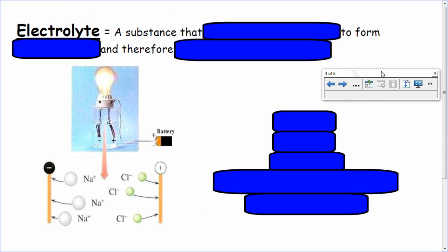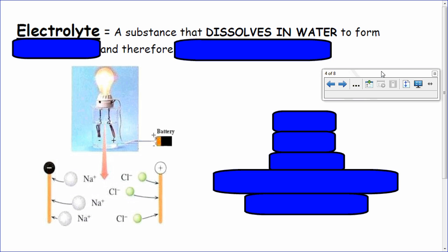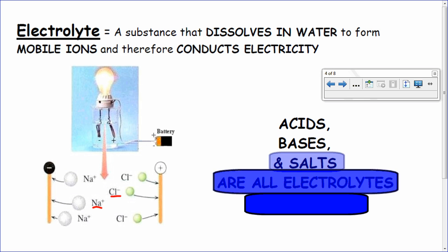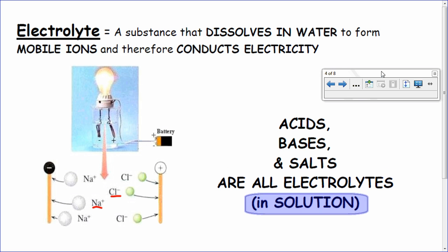Electrolyte — this is what a salt is. Acids, bases, and salts are all electrolytes; it's a bigger umbrella category. An electrolyte dissolves in water, or more specifically dissociates, to form mobile ions and therefore conducts electricity. It doesn't produce electricity — it just lets electricity move through it. There's a picture of a light being powered by a battery with its terminals connected to water. Salts like NaCl have mobile ions, and acids, bases, and salts are all electrolytes when put into solution.